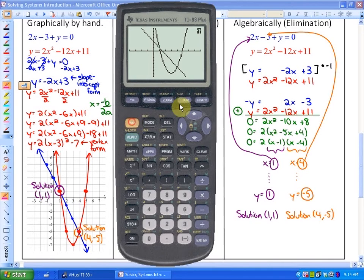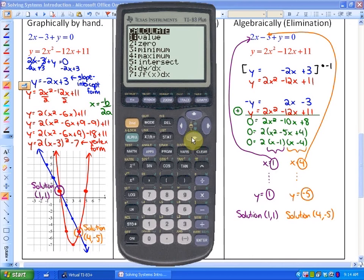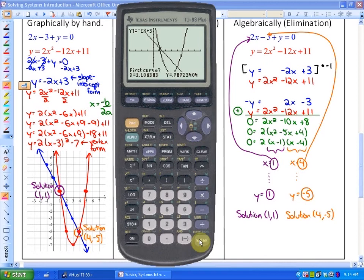As well as what we could do is now, if you want to actually calculate those, we go to 2nd, calculate. We want to calculate where these functions intersect. And you'd have to do this twice. I'll go close to the first intersection point. Hit enter, enter, enter. And you'll see that we get the point 1, 1, which is what we already knew was a solution.